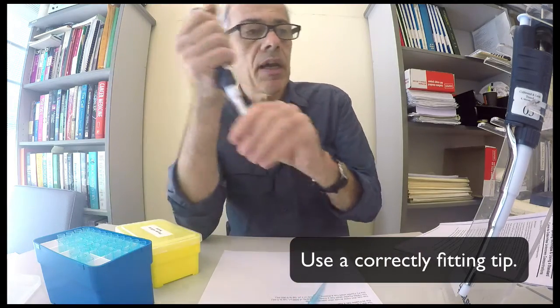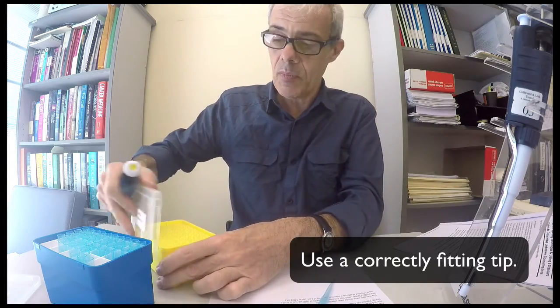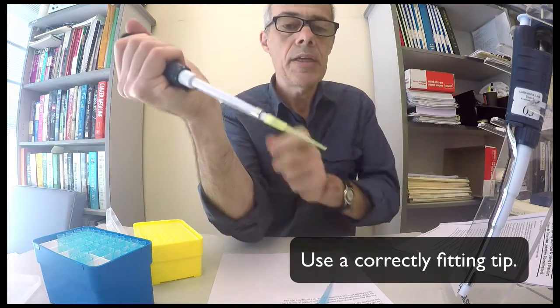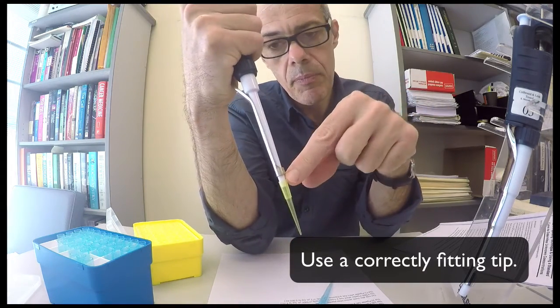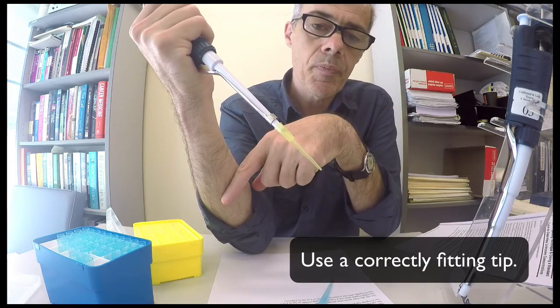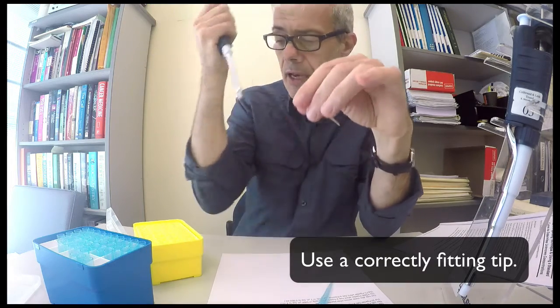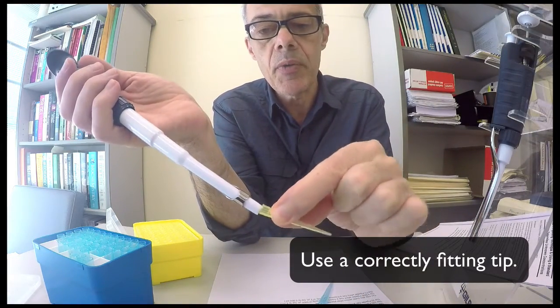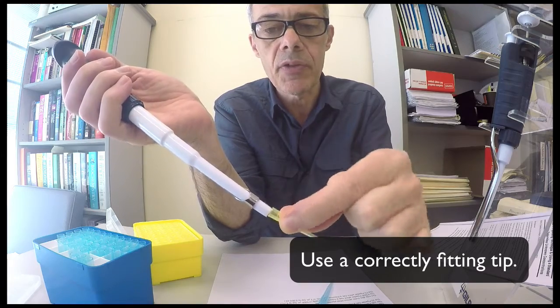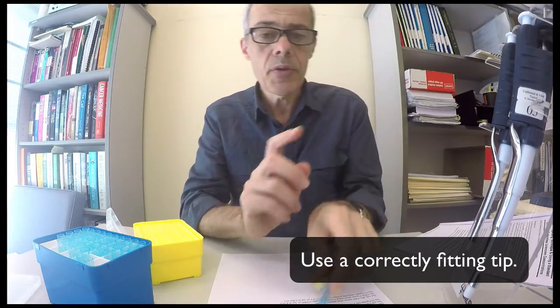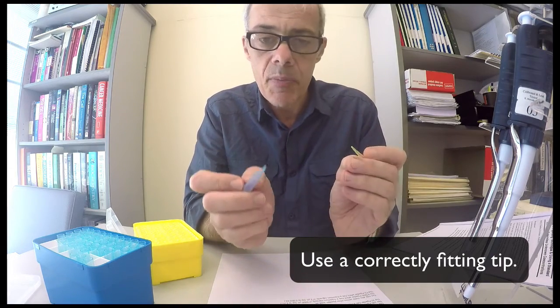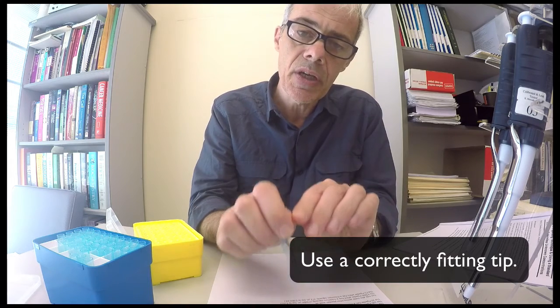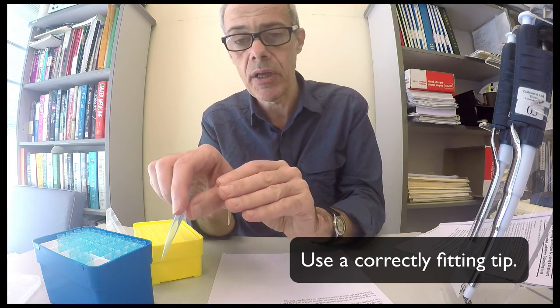And likewise the P200 perfectly fits these yellow tips. The yellow tip doesn't fit anywhere close to the P1000. So when you use these pipettes you only ever use them when the tip is attached, and it's only the tip that you're going to immerse into the solution that you're going to transfer from one container to another container.